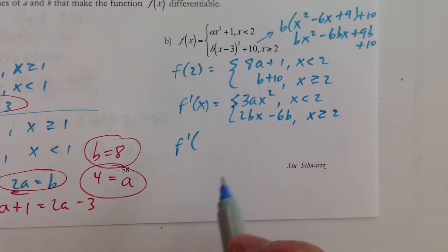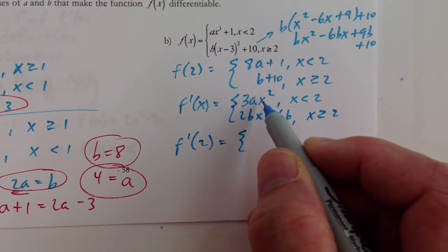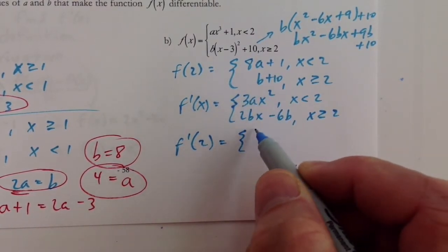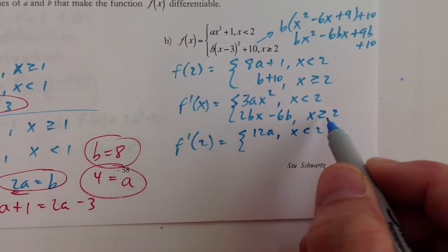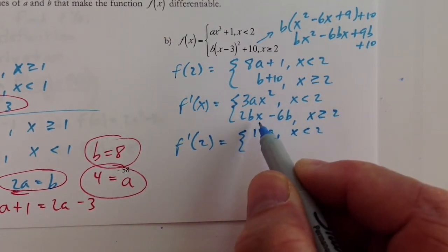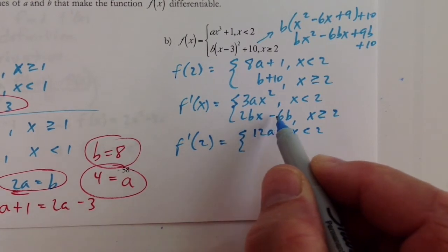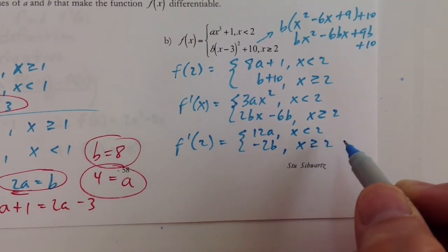So we have f prime at 2, then, would be, put 2 in for x, and we have 2 squared is 4, 4 times 3 is 12. So we have 12a for x less than 2, and when we replace x here with 2, we get 2 here, 2 times 2 is 4, 4b minus 6b would be negative 2b for x values that are greater than or equal to 2.